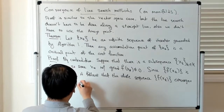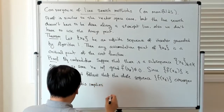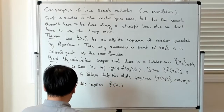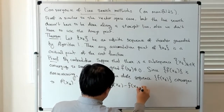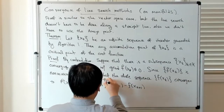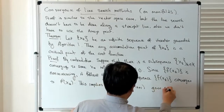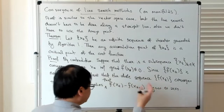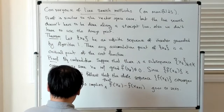This implies that the difference between function values on adjacent iterates goes to zero. It's not possible for the sequence to converge if it wasn't the case that the differences between these things go to zero.